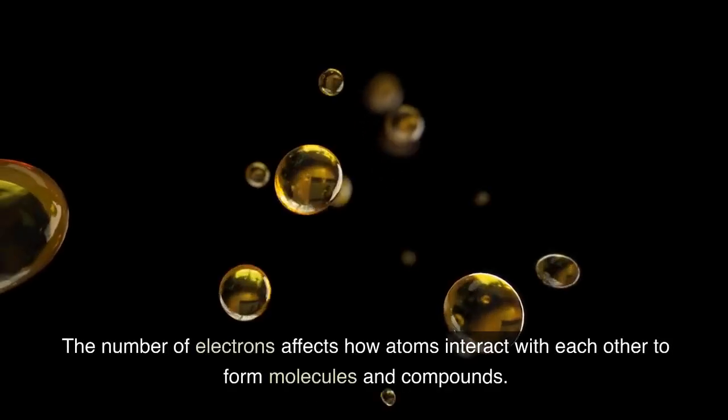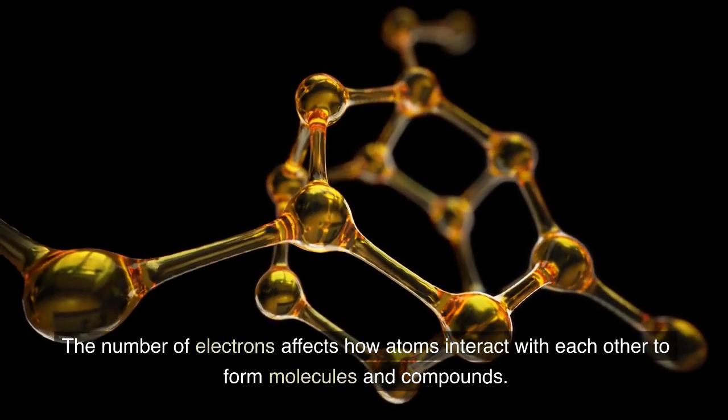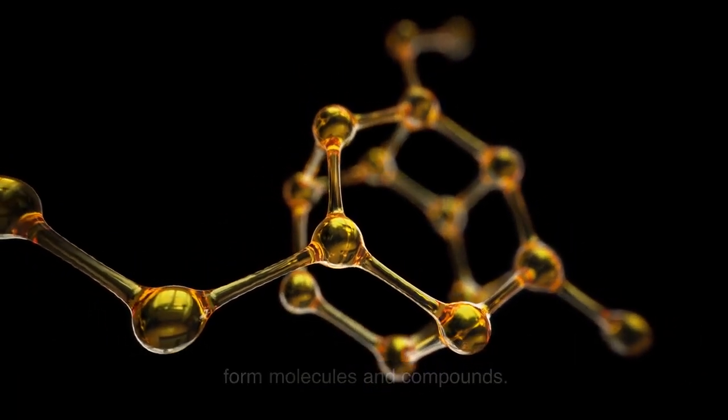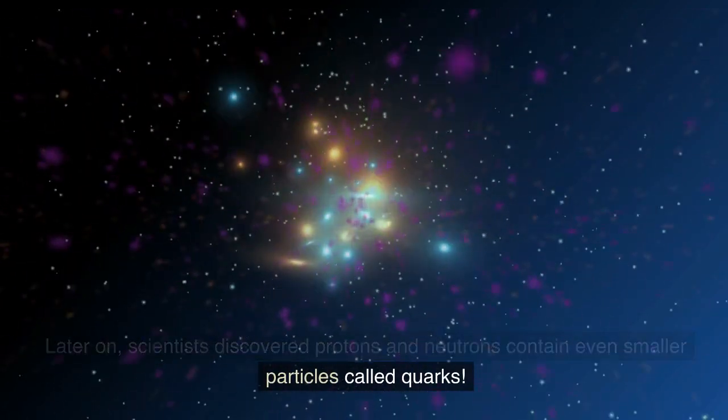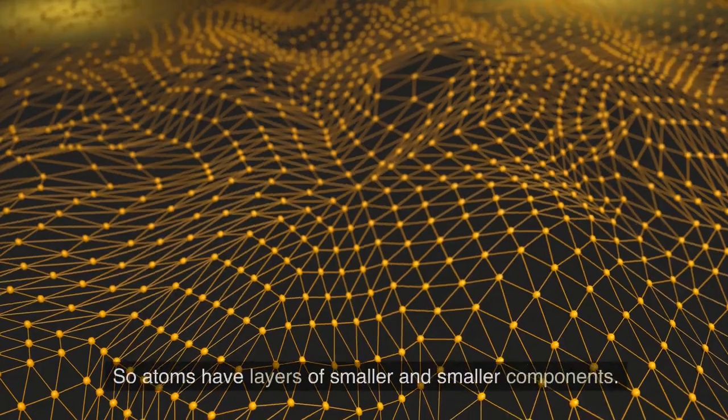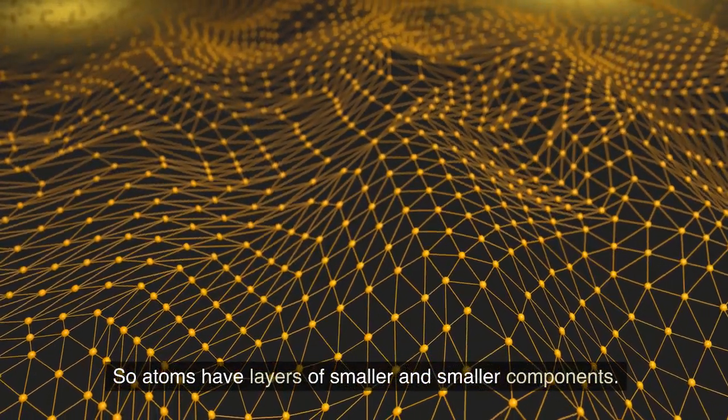The number of electrons affects how atoms interact with each other to form molecules and compounds. Later on, scientists discovered protons and neutrons contain even smaller particles called quarks. So atoms have layers of smaller and smaller components.